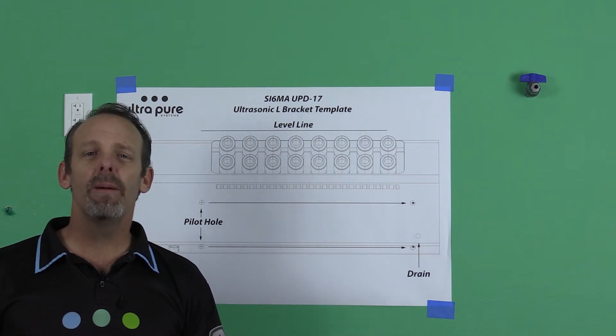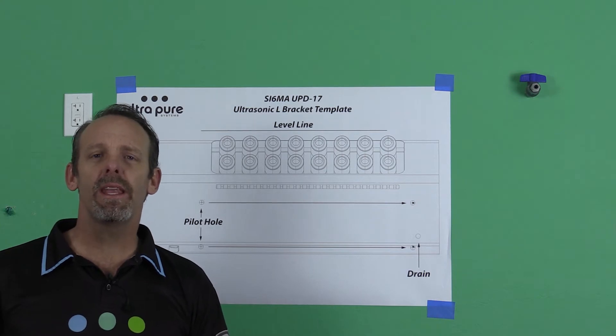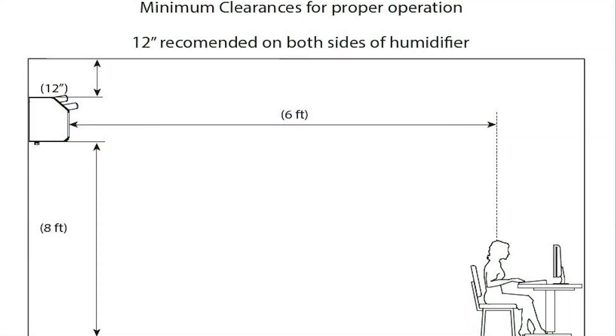Here's an image that's in the IOM manual with the distances that we need in front, side to side, top to bottom, and roof deck to the top of the humidifier. Please conform to those measurements. It's very important.